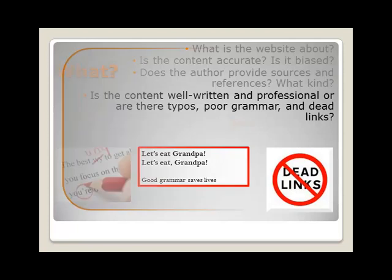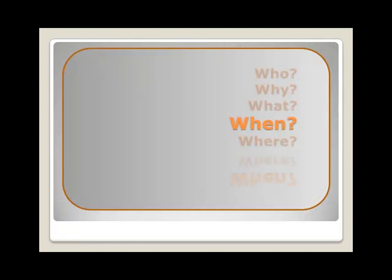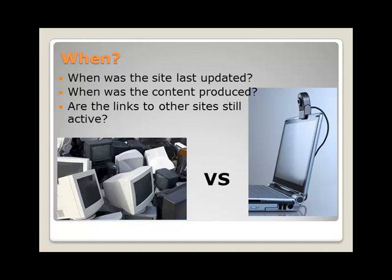The next question we need to ask is, when was this website last updated? The presence of broken links will tell you that the website is not very current. You can usually find the last update at the bottom of the homepage. A frequently updated site is more likely to have reliable, current information, which is crucial to time-sensitive topics like world affairs and social trends.